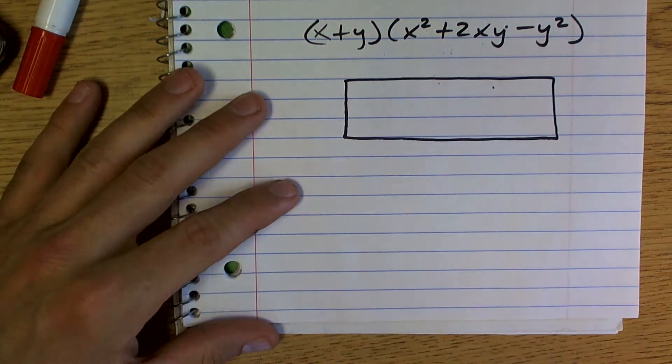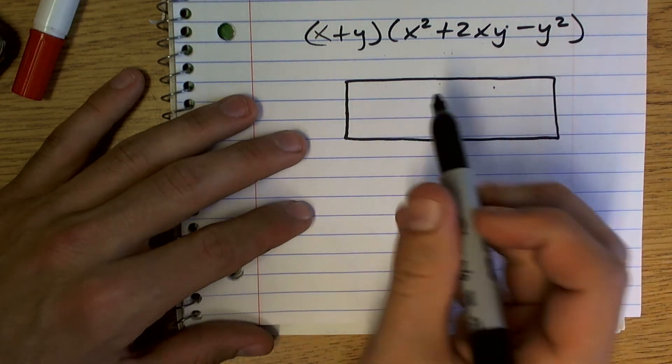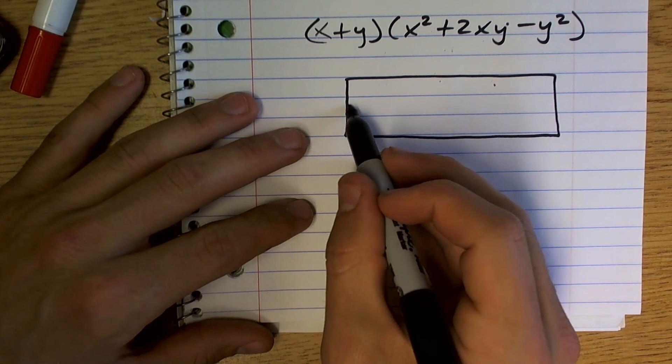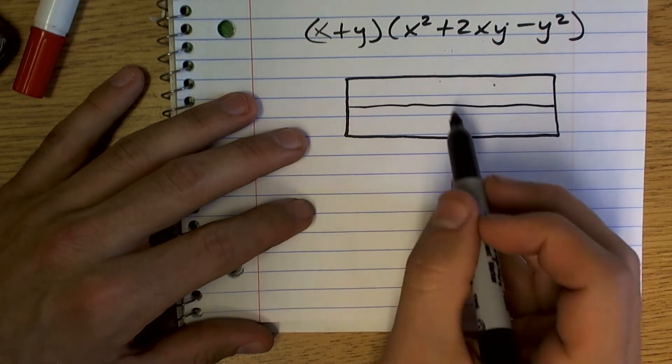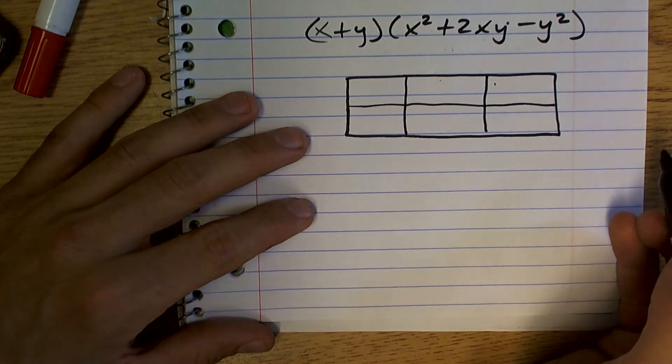All right, and what we're going to do is for how many terms, that's how you're going to segment your rectangle. So since this is a binomial, I'm going to split this box into two parts. And since this is a trinomial, I'm going to break this up into three parts.